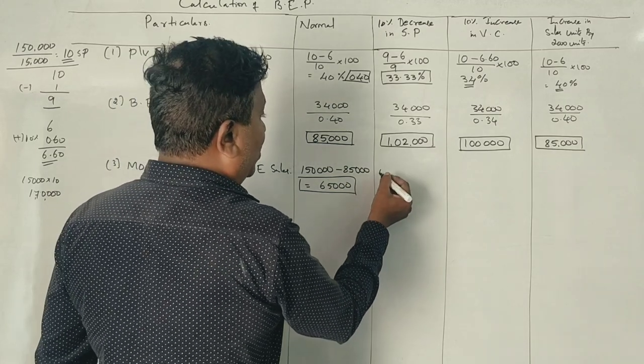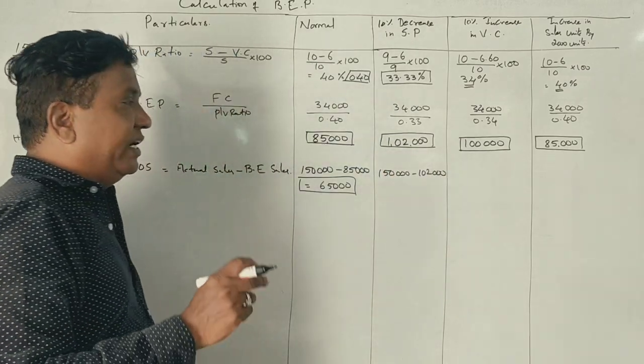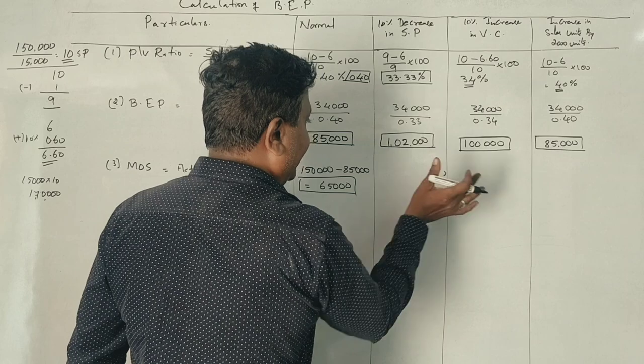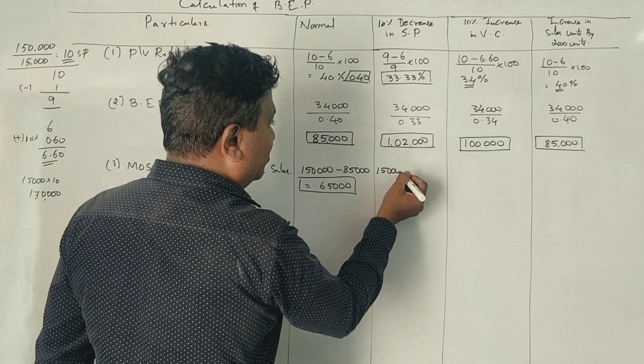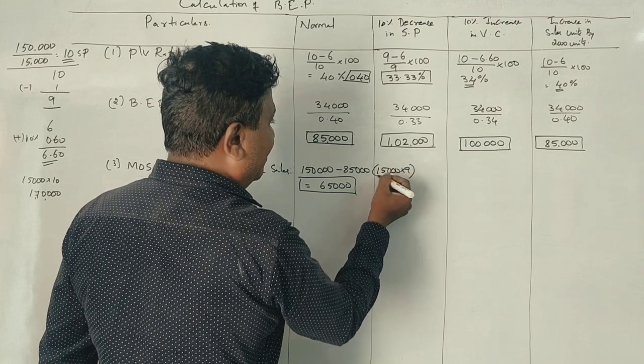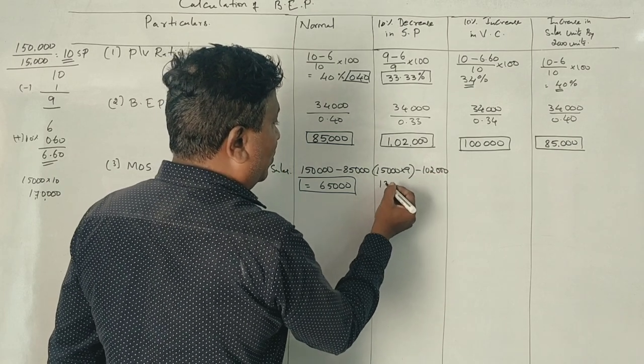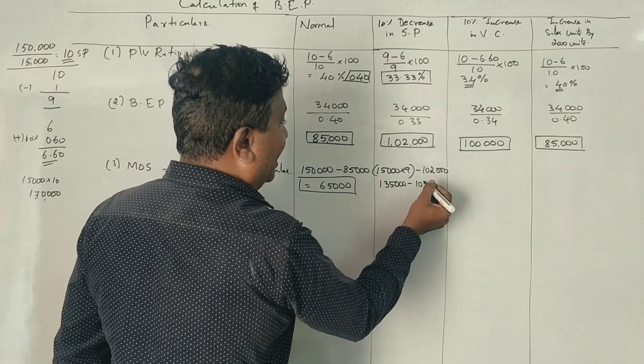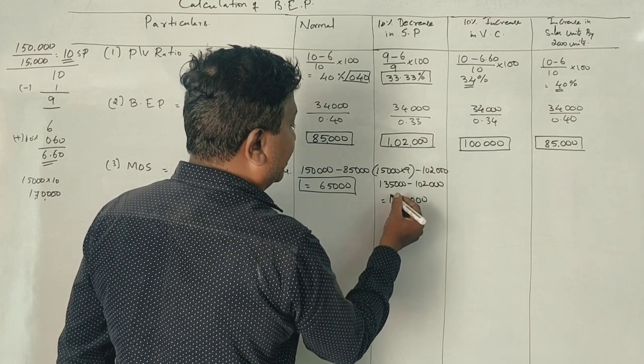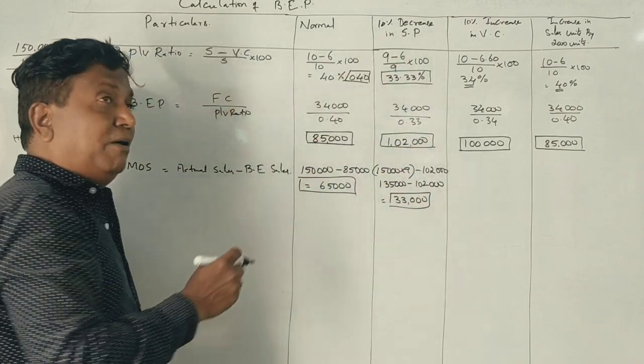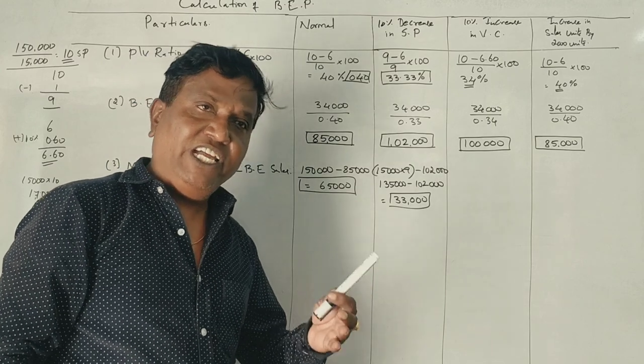Here, actual sales are 1,35,000 when selling price is 9 rupees (15,000 units into 9). Minus 1,02,000 break-even sales equals 33,000 margin of safety. This is the revised margin of safety when selling price decreases.